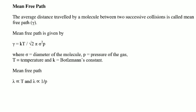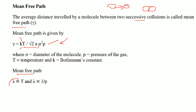Mean free path is the average distance travelled by a molecule between two successive collisions. It is given by λ = kT / (√2 · π · σ² · P), where σ is the diameter of the molecule, P is the pressure, T is the temperature, and k is the Boltzmann constant.